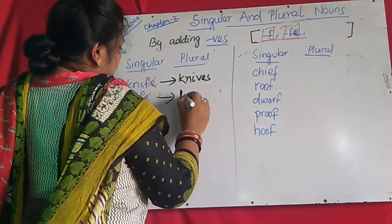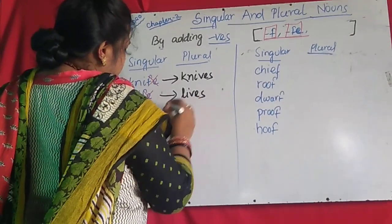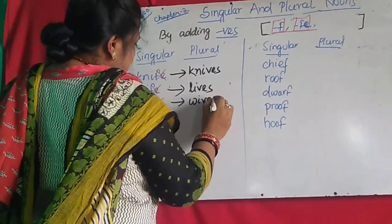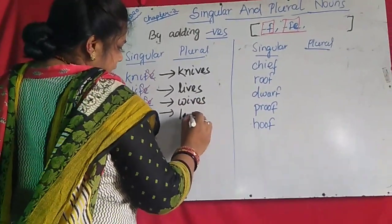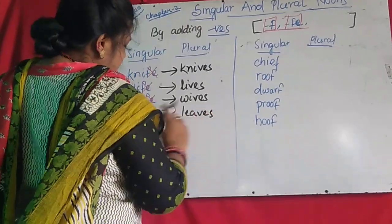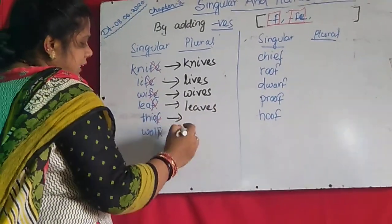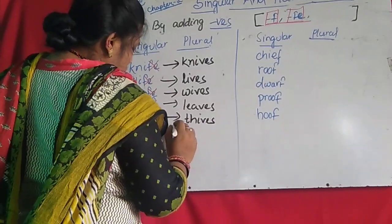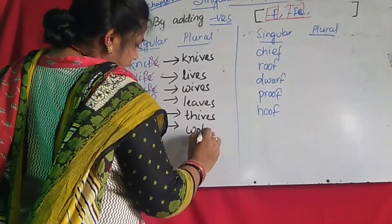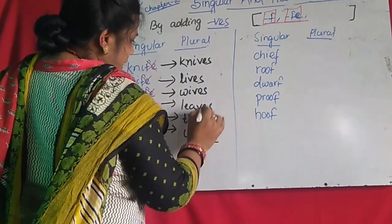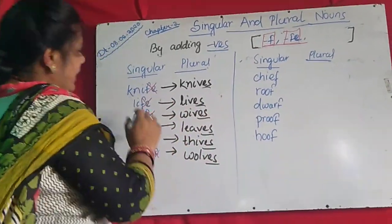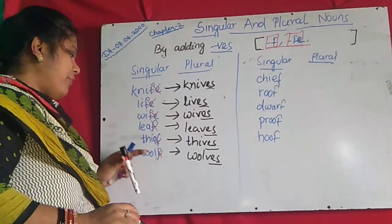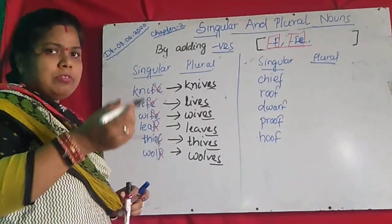'Life' — L-I-F-E — becomes L-I-V-E-S: 'lives.' 'Wife' — W-I-F-E — becomes W-I-V-E-S: 'wives.' 'Leaf' — L-E-A-F — the F will be cut, becomes L-E-A-V-E-S: 'leaves.' 'Thief' — T-H-I-E-F — becomes T-H-I-E-V-E-S: 'thieves.' 'Wolf' — W-O-L-F — becomes W-O-L-V-E-S: 'wolves.' So every word has VES added by cutting the F or FE. If the last letter is F or FE, cut that and add VES while changing singular to plural.